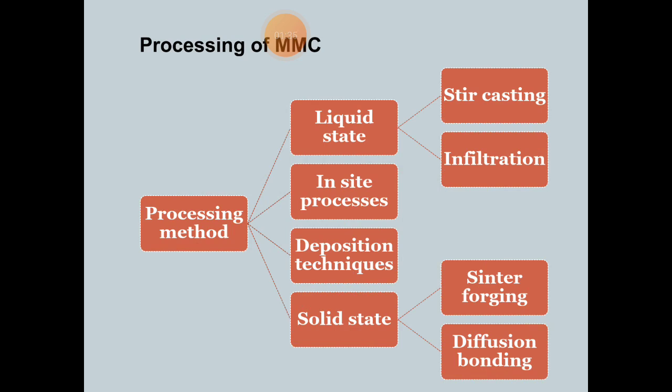There are various methods of processing. These include liquid state processes, deposition techniques, solid state, stir casting, and infiltration. Liquid state includes stir casting and infiltration. Solid state includes powder metallurgy and diffusion bonding.